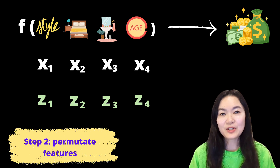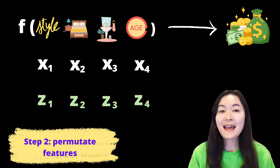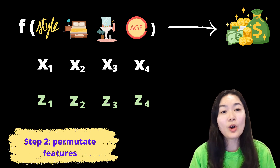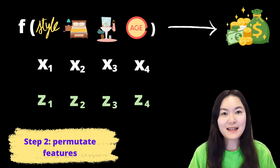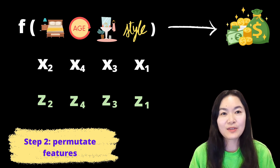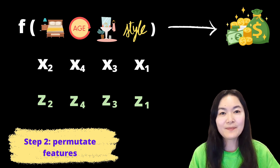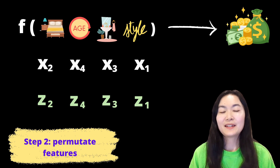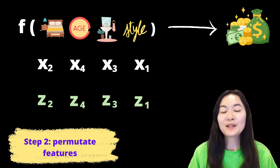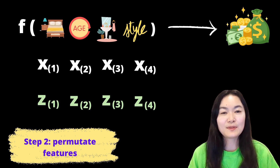Step 2: we permutate the features, meaning that we change the order of the features. For example, here we get x2, x4, x3, x1, and z2, z4, z3, z1. To make it simpler, let's rewrite it into x(1), x(2), x(3), and so on.